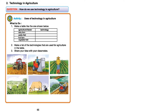On page 65, the topic is 'Technology in Agriculture.' The question arises: how do we use technology in agriculture? There is an activity on this page — you can see a table where we have to find out what kind of technology is being used in different agricultural sectors, like the dairy farm.